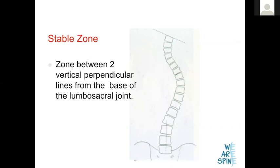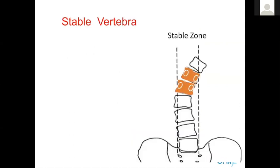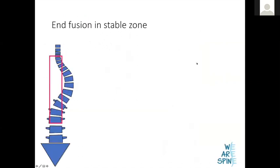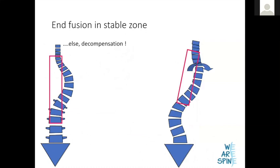The stable zone is the zone in which the line of gravity falls — draw two vertical lines from the L5-S1 junction. It's important when doing surgery to start and finish within this stable zone, else your construct will be erected outside the line of gravity and tend to fall to one side. The stable vertebra is the vertebra best bisected by the mid-sacral line; your lower instrumented vertebra should be the stable vertebra. If you stop your fusion short of the stable zone, the entire fusion will fall off on one side.